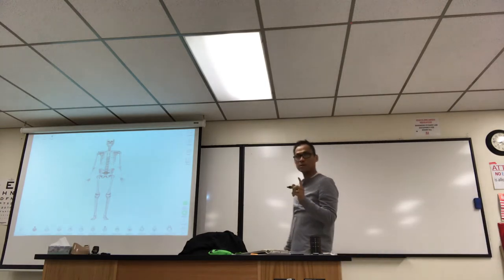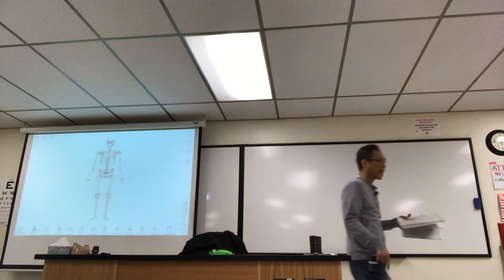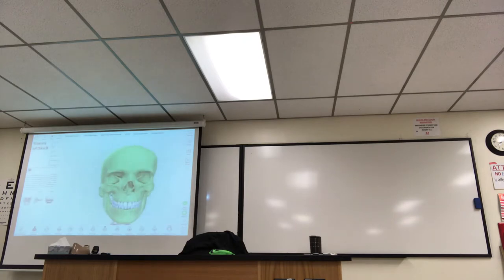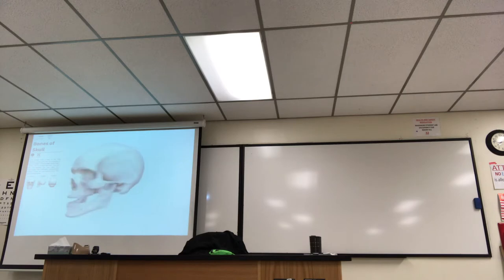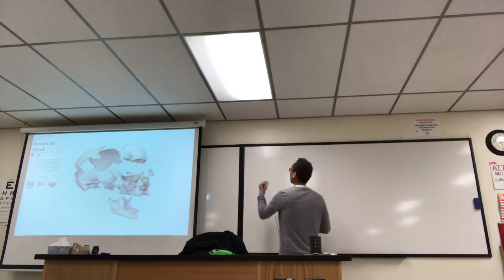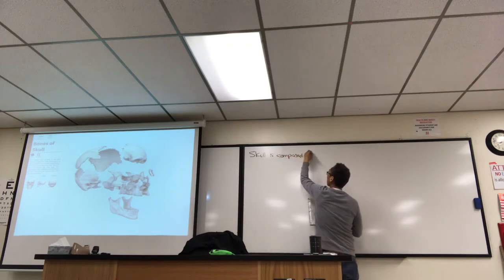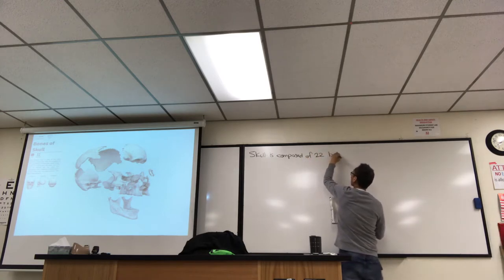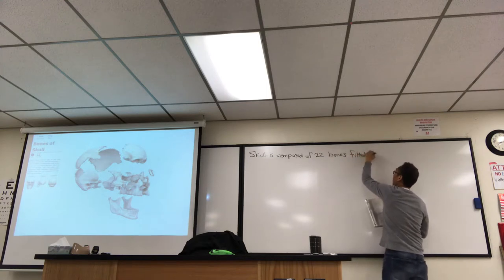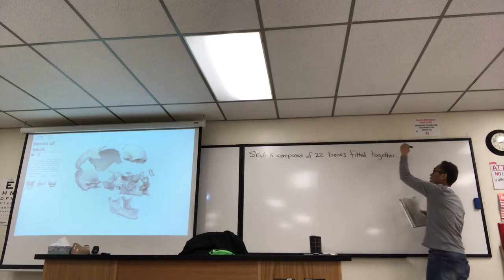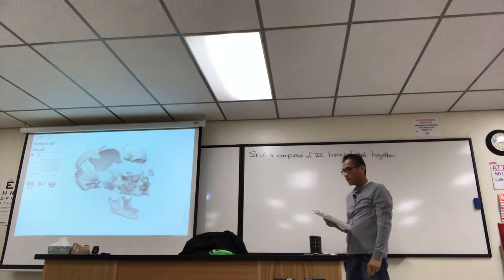We're doing the skull today. Let me list all the skull bones — there are a lot of them. The skull is composed of 22 bones fitted together. There are two basic regions of the skull: cranial bones and facial bones.